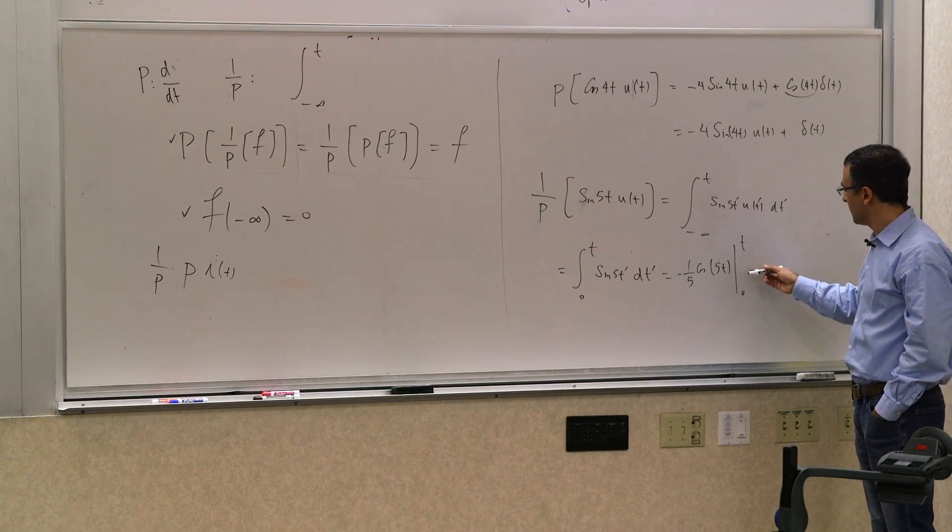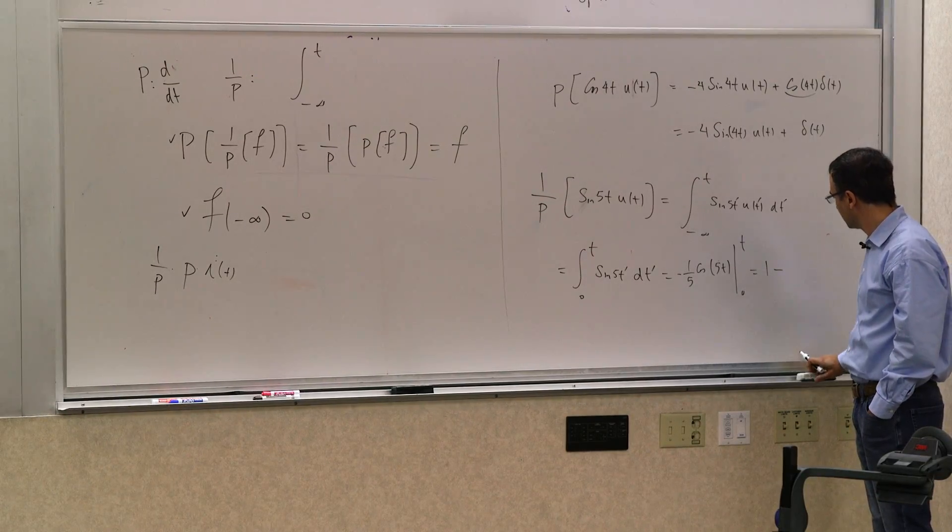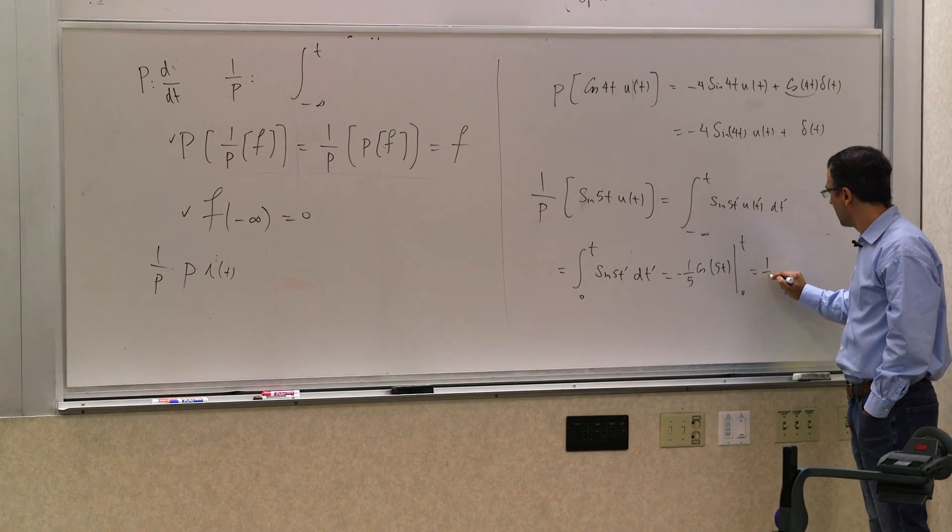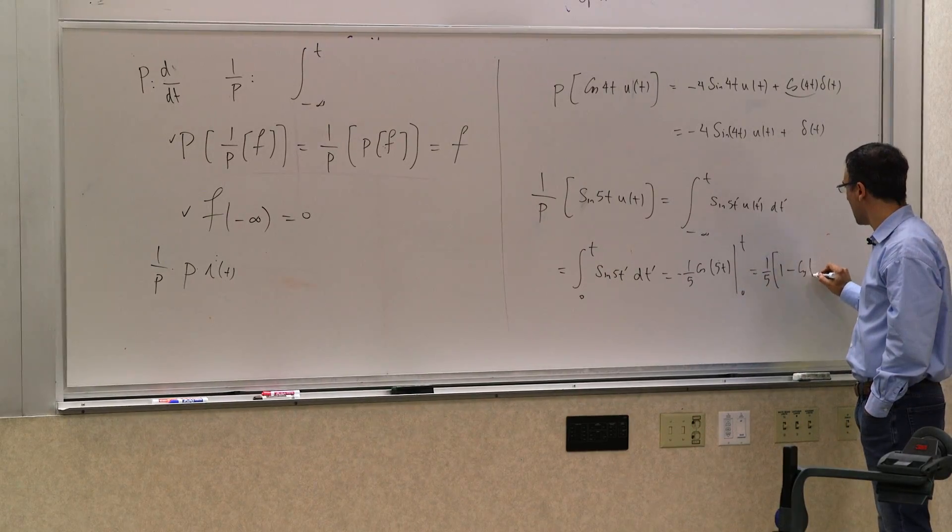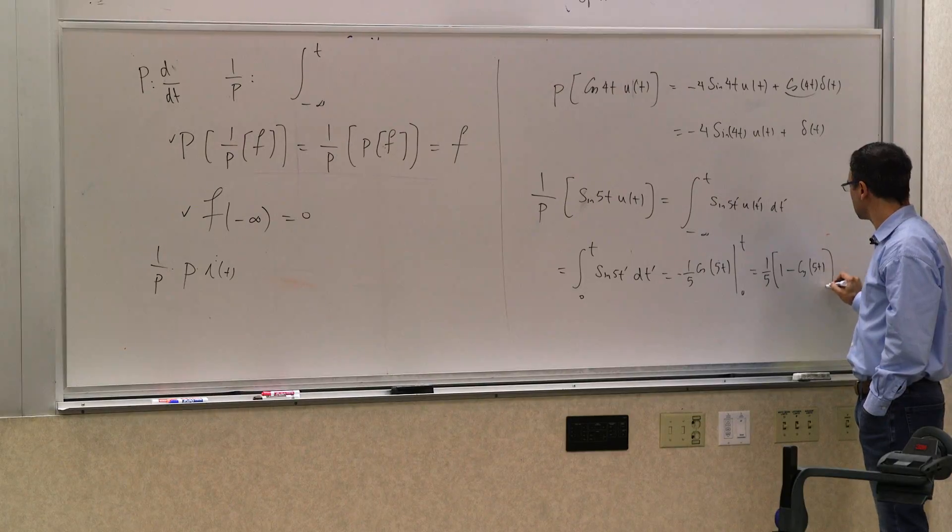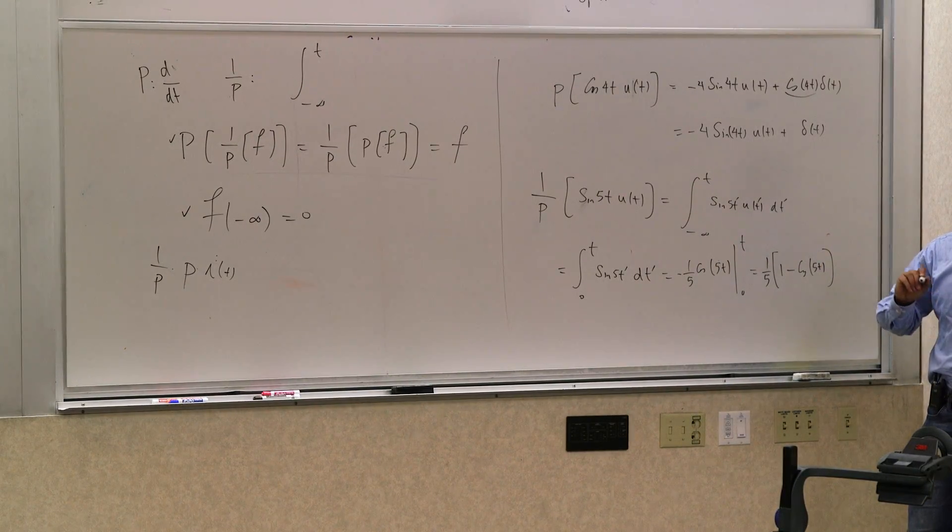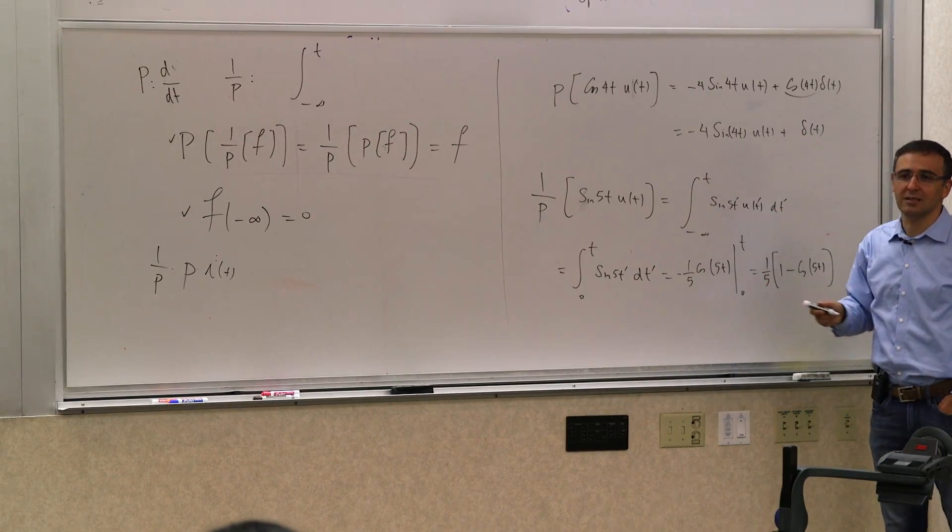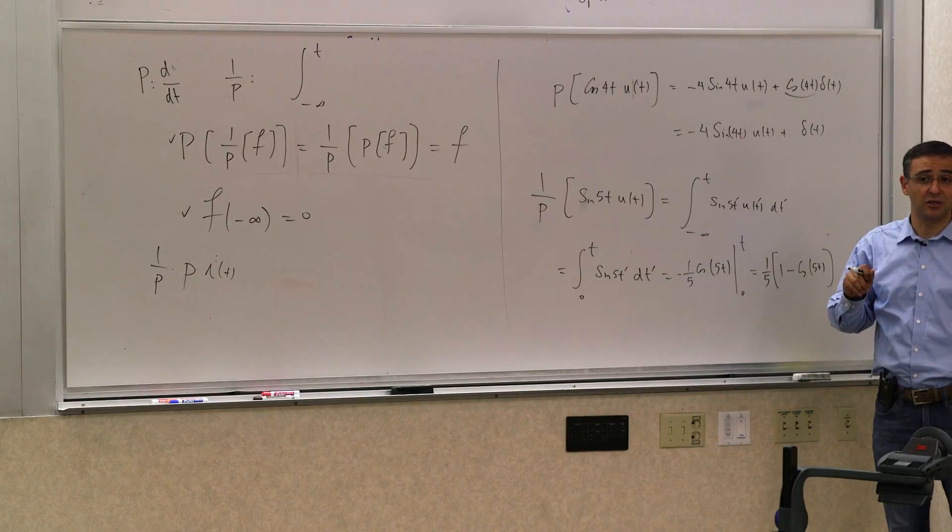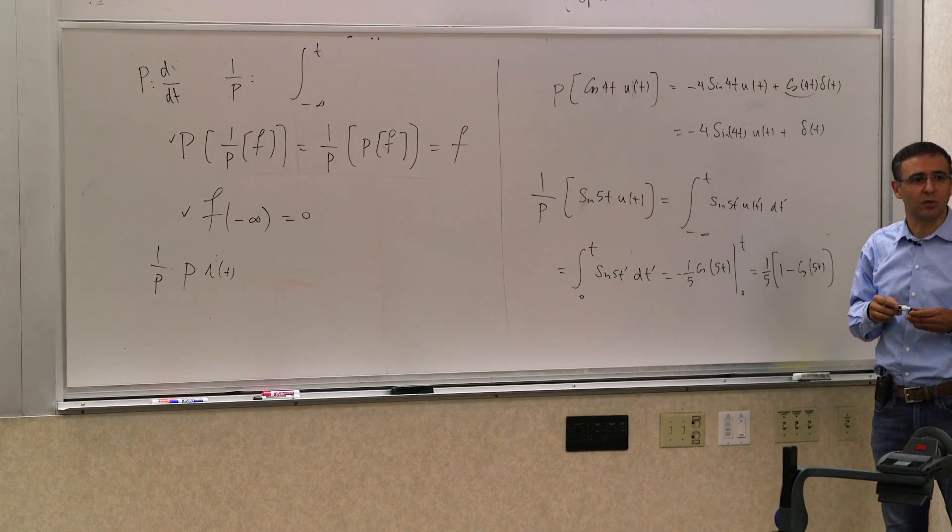1 fifth of minus cosine of 5t evaluated from 0 to t. At t, it is what it is. And at 0, it's 1. So 1 fifth times 1 minus cosine of 5t. So that's what it is. You need to get comfortable with doing integrals that have impulses and steps and things of that sort in them and derivatives of that nature.